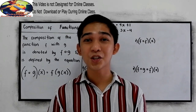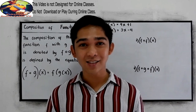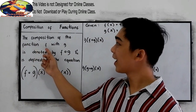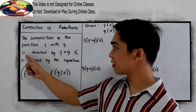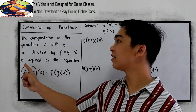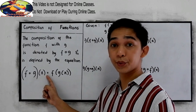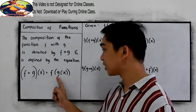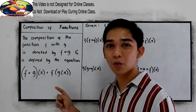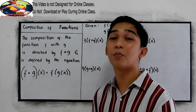Good day everyone! Welcome to Senior Pablo TV. For today's tutorial video we will be discussing composition of functions. The composition of the function f with g is denoted by f composed of g, and is defined by the equation f composed of g of x is equal to f of g of x. That means we're going to apply our operational functions and evaluating functions in this composition of functions.